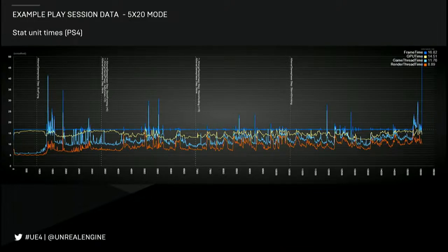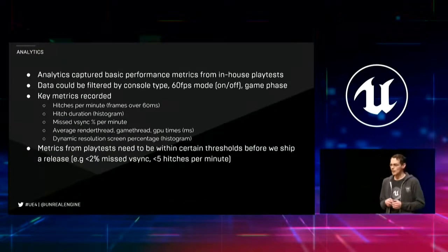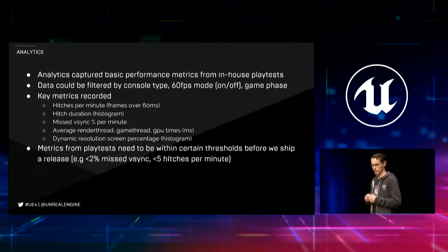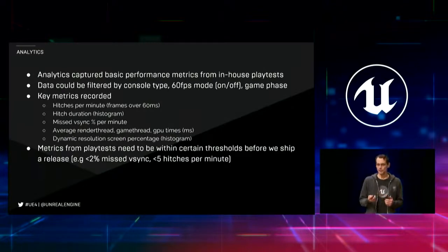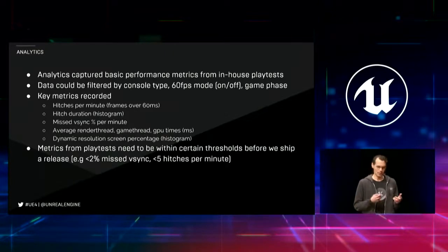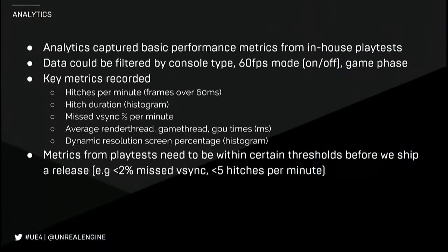Here's an example result from one of those play sessions — just a graph of frame time throughout the course of the match, including GPU time, game thread time, and render thread time. We also gathered analytics data, both from the wild and internally. We keep metrics like how many hitches we see per minute, how long the hitches are, missed v-sync percentages — basically how many frames we dropped during the course of the match — and information about the different thread times. We also send back information on what resolution the game is rendering at. This is important when you're using dynamic resolution to scale the game, because regressions in GPU performance can turn into visual quality regressions rather than frame rate regressions. We tried to make sure we never dropped more than two percent of frames during a match and had fewer than five hitches per minute. We defined a hitch as 60 milliseconds.